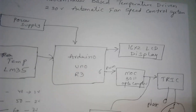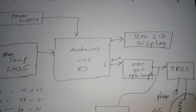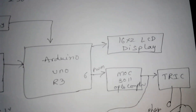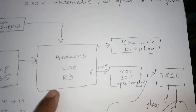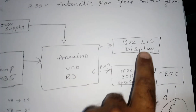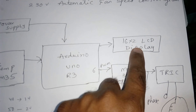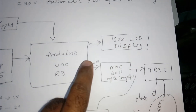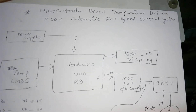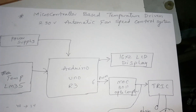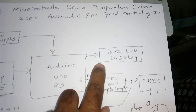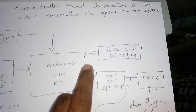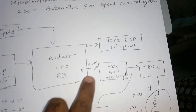In this project we are using a 16x2 LCD character display. Whatever process is going on should be displayed on the LCD. The LCD is connected to pins 8, 9, 10, 11, 12, and 13, which I'll show you in the code.